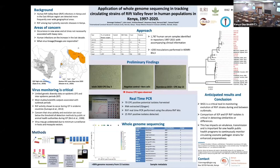In conclusion, whole genome sequencing is a critical tool in monitoring RVF strains during and between outbreaks. RVF is a priority zoonotic disease in Kenya and requires a One Health approach in surveillance, detection, and evolution studies to detect potential changes that may impact its virulence and transmission.